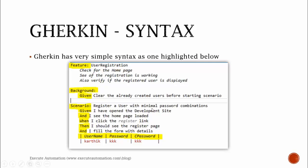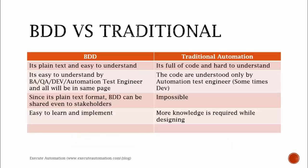As you can see here, for the scenario we have 'Register a user with a minimum password combination' — that's the name of the scenario. There is another statement: 'Given I have opened the development site.' If I give this particular text, it will open my development site and then load the home page as given in the next step. We'll discuss how these statements trigger actual actions in upcoming sessions.